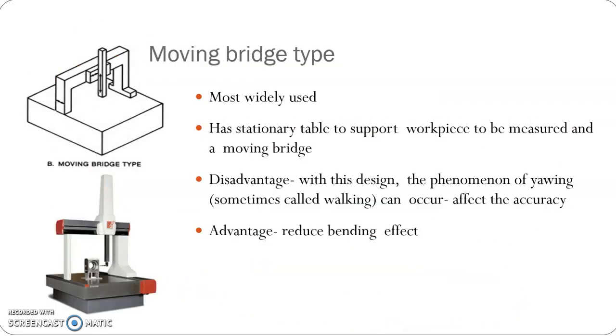In moving bridge type, the vertical probe is fixed on a moving bridge. The bridge moves on the guideway provided on the table, and the movement of the bridge is the X axis. The vertical movement is the Z axis, that is vertical movement of the probe head. The probe also slides on the face of the beam, that is the bridge, and that is the Y axis. This design has a reduced bending effect compared to cantilever type, but the problem is the yawing of these two legs of the bridge.